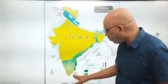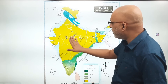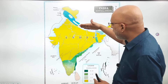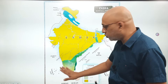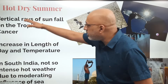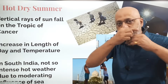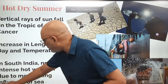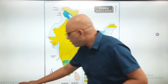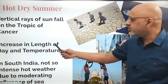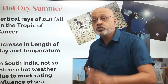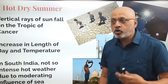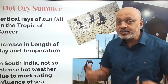By the end of May, the rain hits the Kerala coast and gradually moves along the Indian subcontinent. Because of the Himalayas, the monsoon stays and then retreats — without the Himalayas, it would have crossed over. The vertical rays of the sun fall directly on the Tropic of Cancer, increasing the length of the day and raising temperatures. In south India, the hot weather is not as intense because of the moderating influence of the sea.